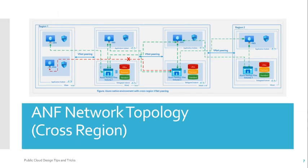Azure NetApp Files also supports cross-region replication. If you have a NetApp Files volume in region 2 and your virtual machine is in region 1, you can mount that volume to the VM in region 1 — but you need to have direct vNet peering. Since transit peering is not possible, if you are not using direct peering you cannot mount the volume to a transitively connected virtual machine.